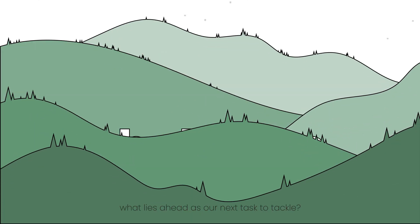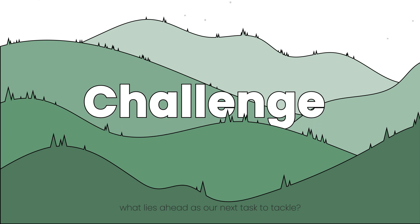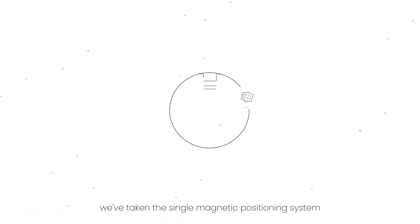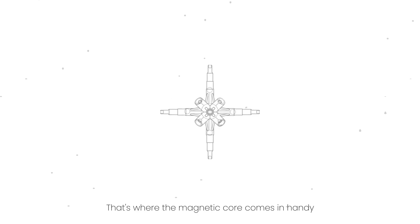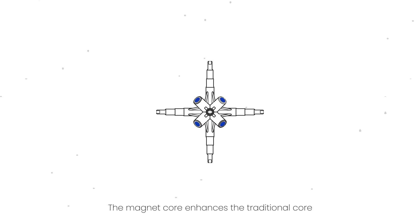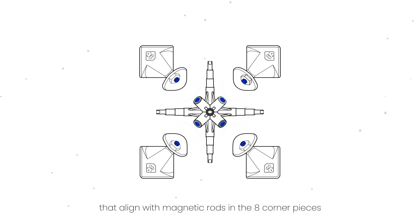And now, what lies ahead is our next task to tackle? Through generations of upgrades, we've taken the single magnetic positioning system between pieces to its pinnacle. However, the initial resistance during rotation remains notable, and the burst of magnetism lacks continuity. We need a robust core that can drive the entire cube's movement. That's where the magnetic core comes in handy. The magnet core enhances the traditional core by incorporating an additional eight magnets that align with magnetic rods in the eight corner pieces to establish axial magnetic positioning.